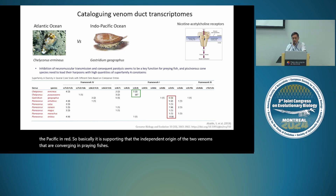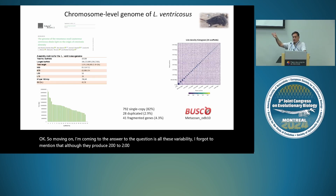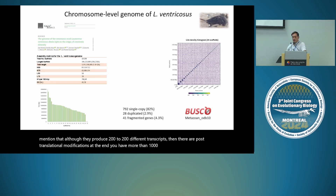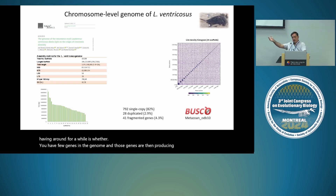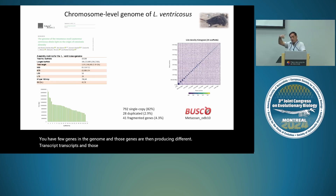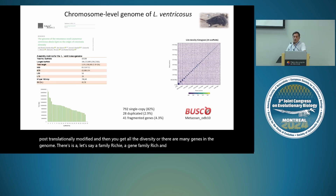An important question is whether all this diversity comes from few genes in the genome producing different transcripts with post-translational modifications, or whether there are many genes — a gene-family-rich genome. Although species produce 100–200 different transcripts, post-translational modifications mean you end up with more than a thousand different peptides in the venom cocktail. So we generated the first chromosome-level genome of a cone snail to answer this.